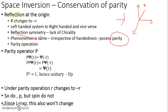The reflection at the origin is often referred to as the parity operation, and we represent it using the symbol capital P.